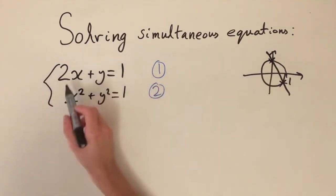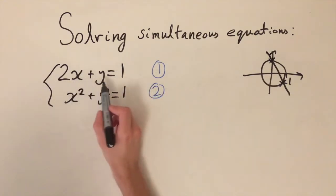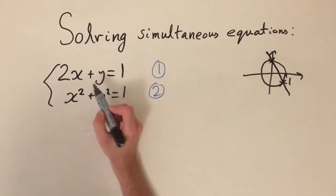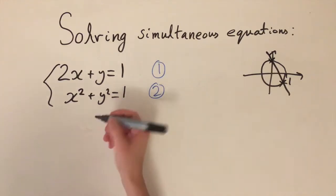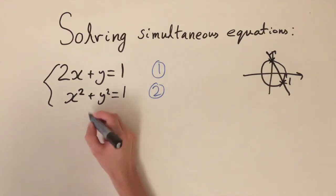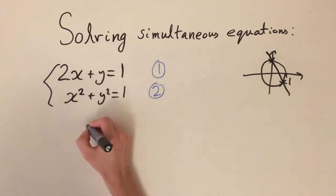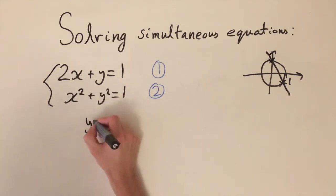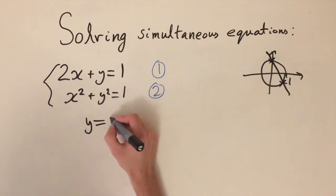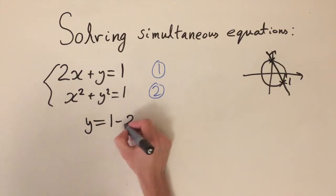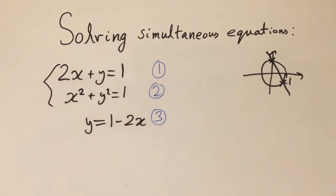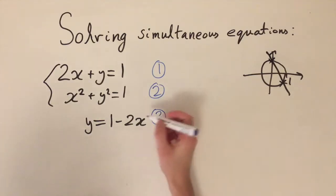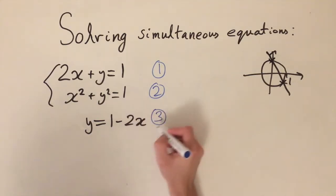Let's start by rearranging the first equation. We've got y on its own, so this is going to be the nicest thing to isolate. If we move the 2x onto the other side, we get y is equal to 1 minus 2x. Let's label this as equation number three.